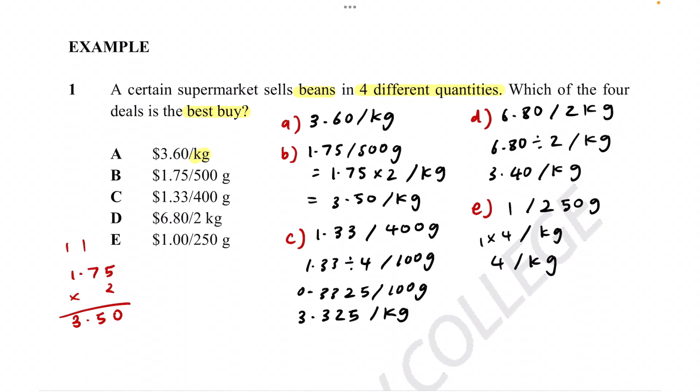Now, if we have these answers, we can see that this is the cheapest price, $3.325 per kilogram. Therefore, the answer is C.